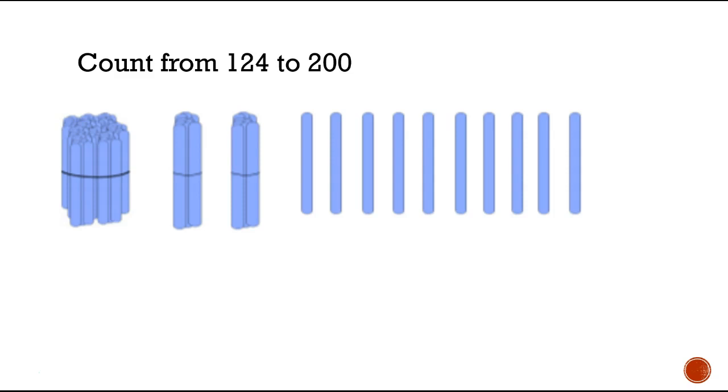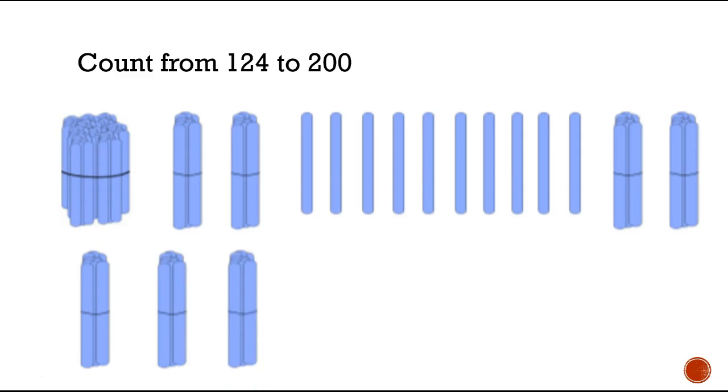Right, we should move to the bundle of tens because it's just going to take too long if we keep counting by ones. We've got 130 straws here now. So let's start counting by tens again: 130, 140, 150, 160, 170, 180, 190, 200. Challenge complete.